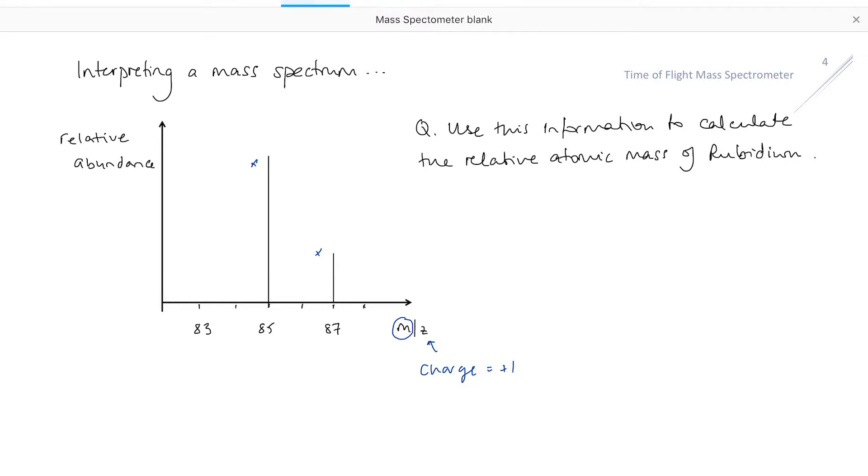In this case, the spectrum will have been obtained by the element being bombarded by high-energy electrons and one electron has been knocked out to create our positive ions.